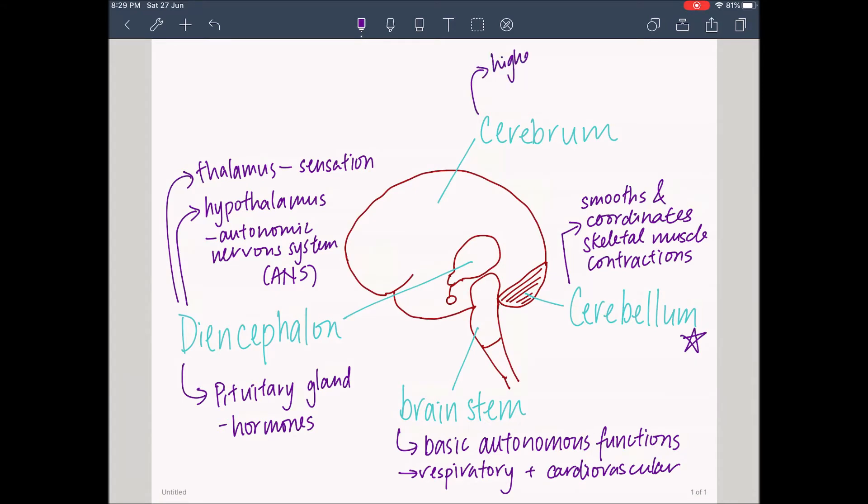The cerebrum is split into two hemispheres, the left and the right. It is responsible for high-level brain functions. There are three categories. Sensory, which is the receiving of sensory impulses.